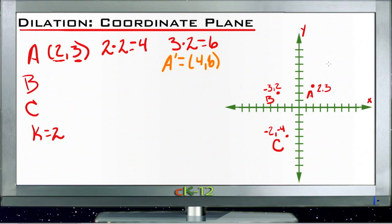So A' would be 1, 2, 3, 4, 5, 6, right up here. And you can see that it's in exactly the same direction from the origin as A was, it's just twice as far out because our k-factor was 2.